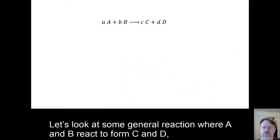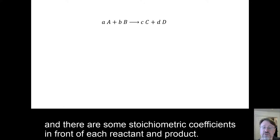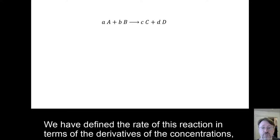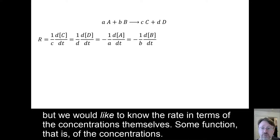Let's look at some general reactions where A and B react to form C and D. And there are some stoichiometric coefficients in front of each reactant and product. We have defined the rate of this reaction in terms of the derivatives of concentrations, but we would like to know the rate in terms of the concentrations themselves.